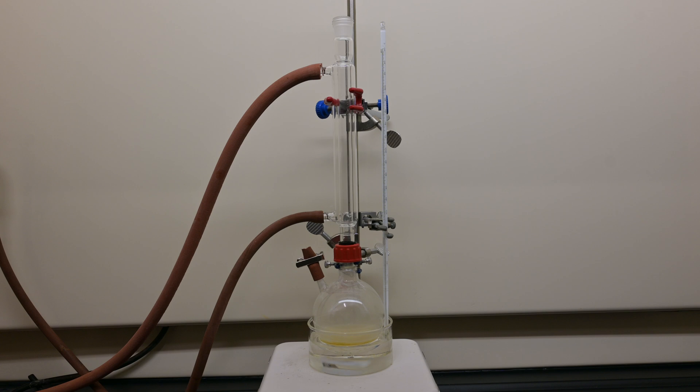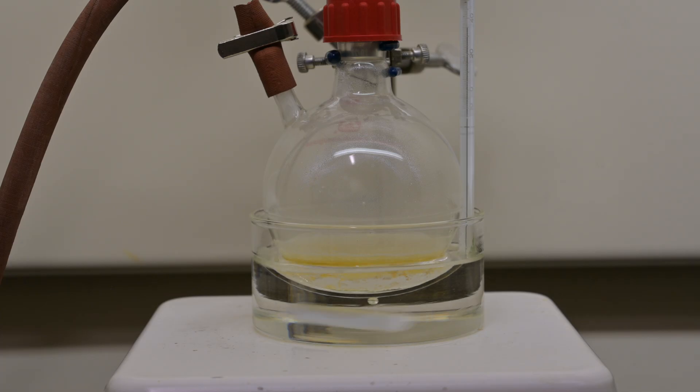Now attach the reflux condenser to our flask and place it into an oil bath. We then heat the mixture at 180 to 190 degrees Celsius for 4 to 5 hours with continuous stirring.